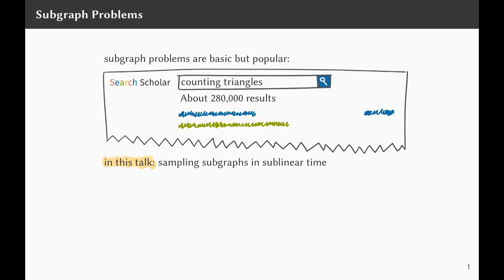When I say sampling, I mean that we fix some subgraph, for example a triangle, and we want to sample uniformly at random from all copies of that triangle in the given input graph. When I say sublinear, I mean that we are not allowed to read the whole input graph — so in particular, we are not allowed to enumerate all copies of triangles and then pick one randomly from this list.